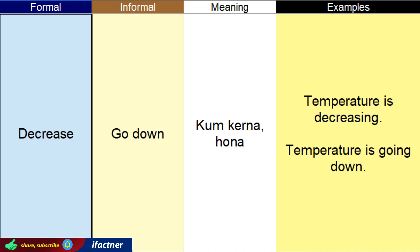Ladies and gentlemen, aap ko welcome kehta hoon iFactner ke formal and informal English words video tutorial series mein. Aaj ke video tutorial mein, mein aap ko bees English ke words ke meaning aur un ke usage ko sikhaaun ga. In 20 words mein se 10 jo hain wo formal English words kehlayenge, jo ke hum office vaghira mein bolte hain. Aur 10 jo hain wo informal English words hain, jo ke hum aam bolchal mein use ker sakte hain. Yeh words mein aap ko pairs mein bataaun ga aur un dono words ka meaning same hoga, lekin jab hum un ko use karenge to humay pata chalega ke hum nay office ya formal writing ke dauran kounsa word use kerna hai, aur aam bolchal mein kounsa word use kerna hai.